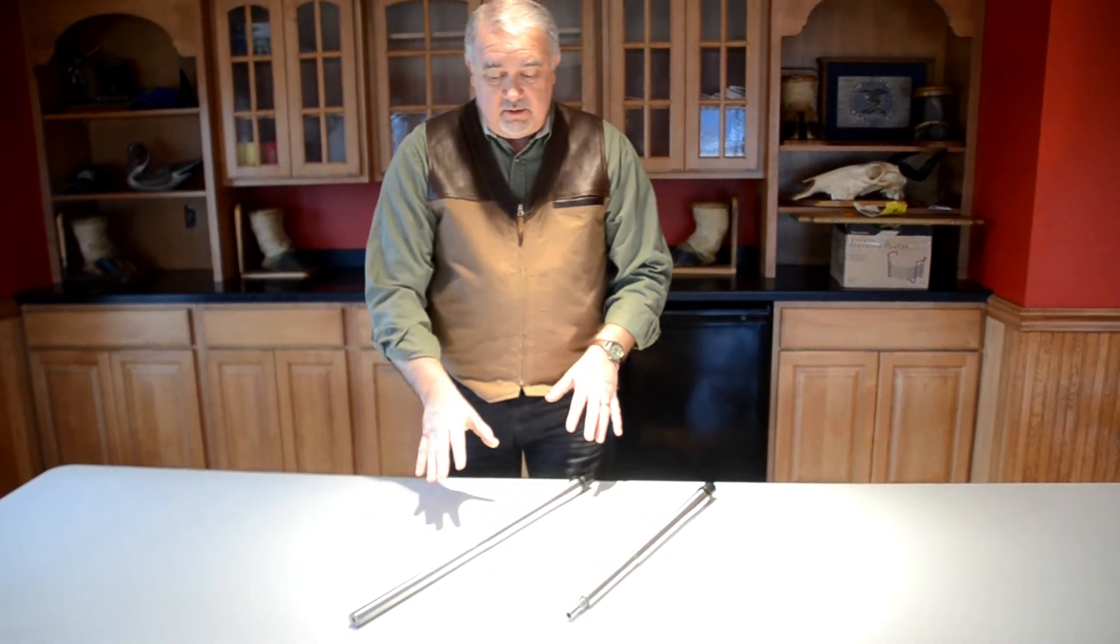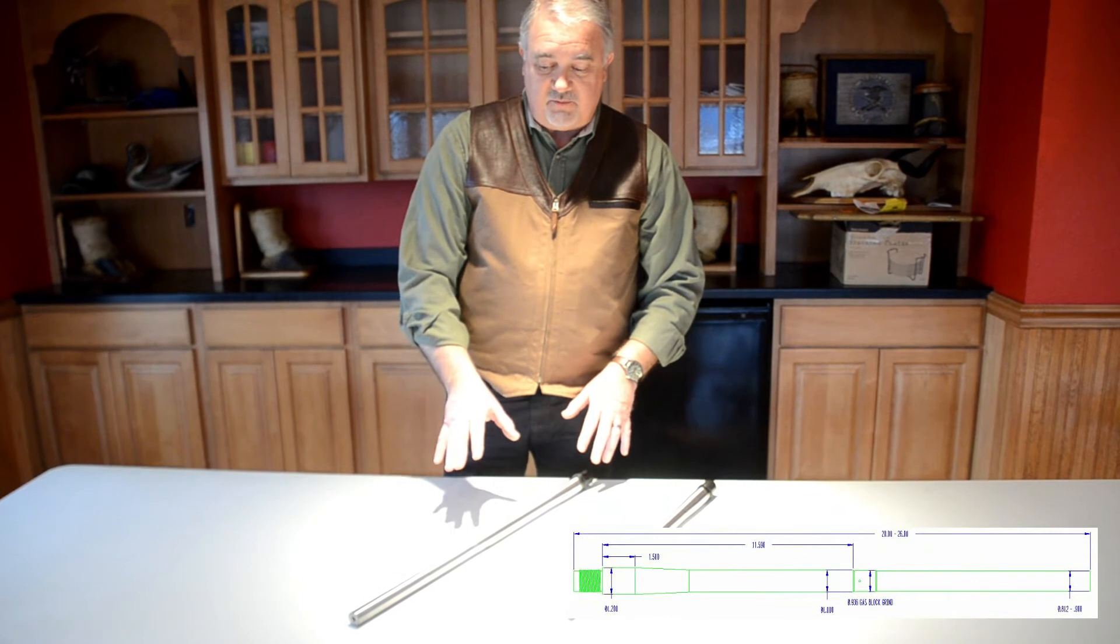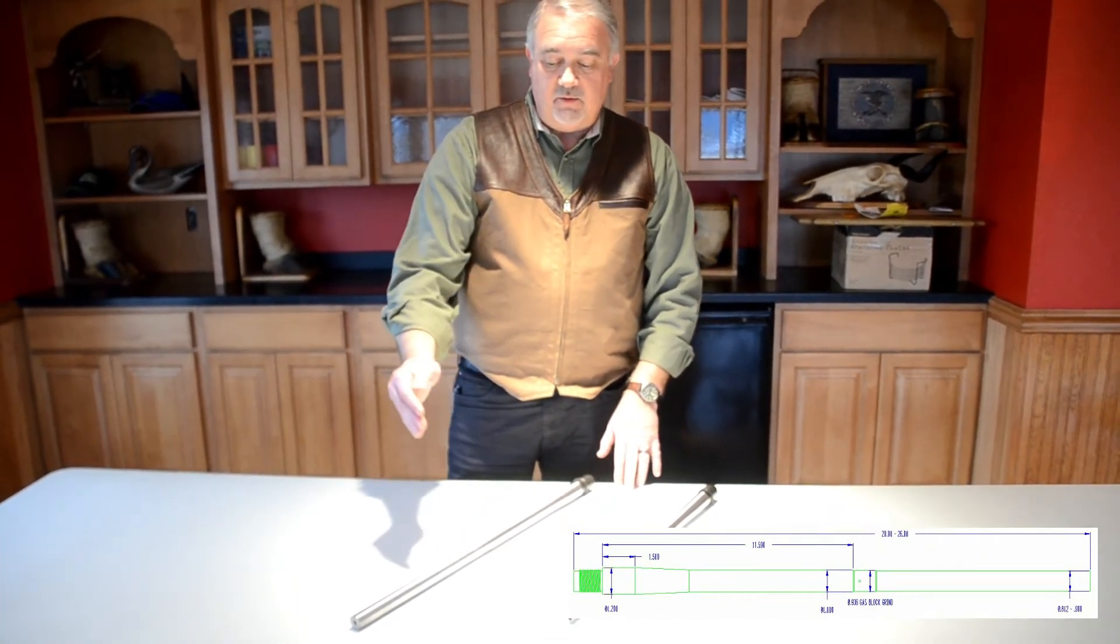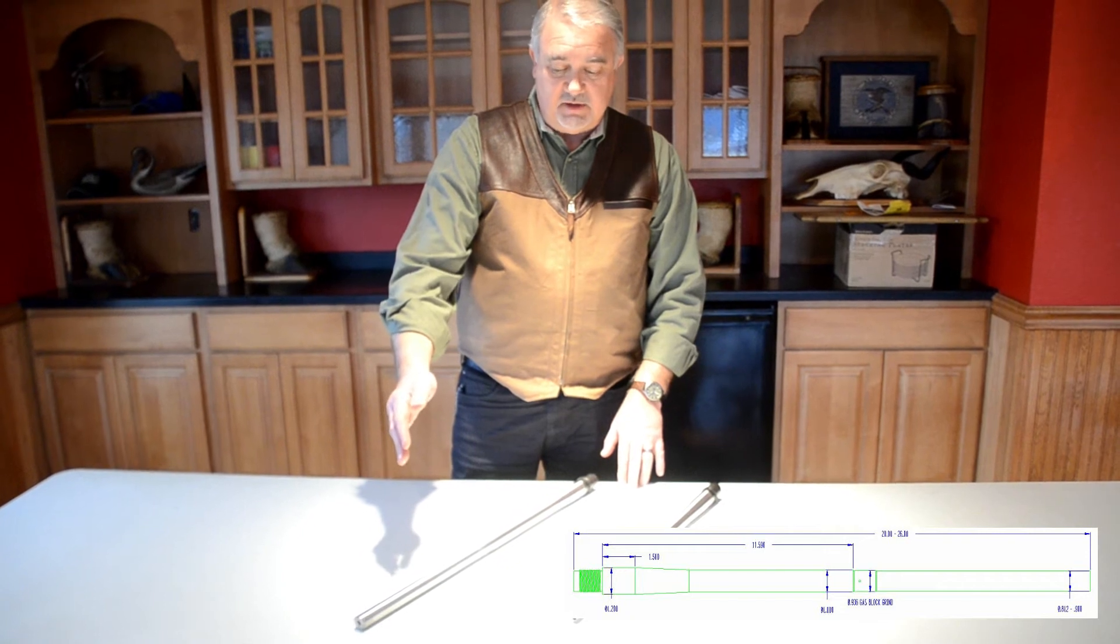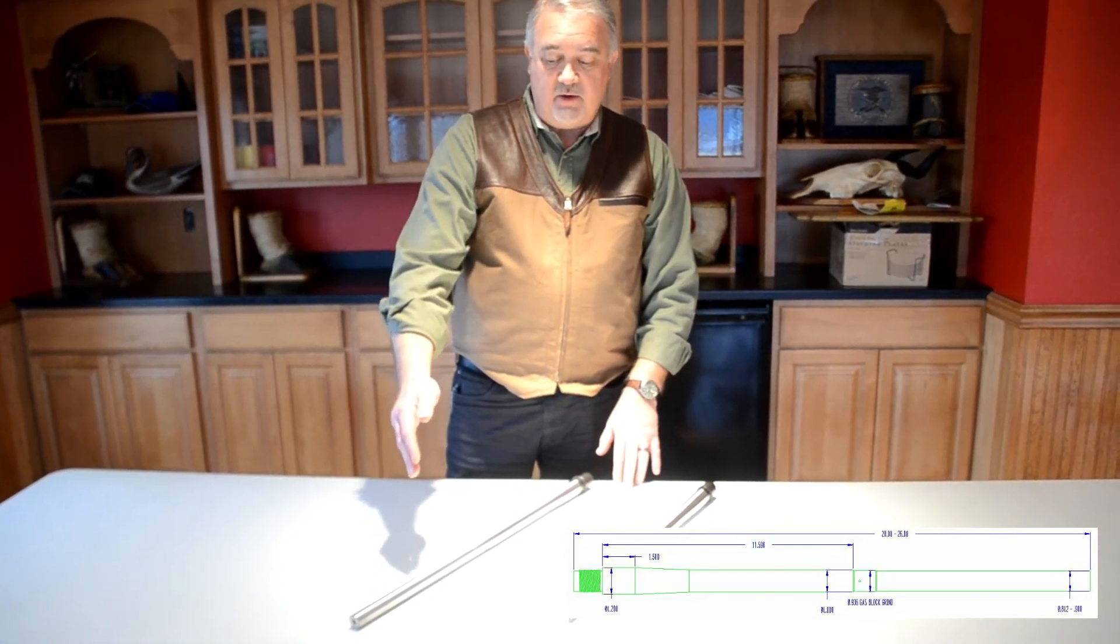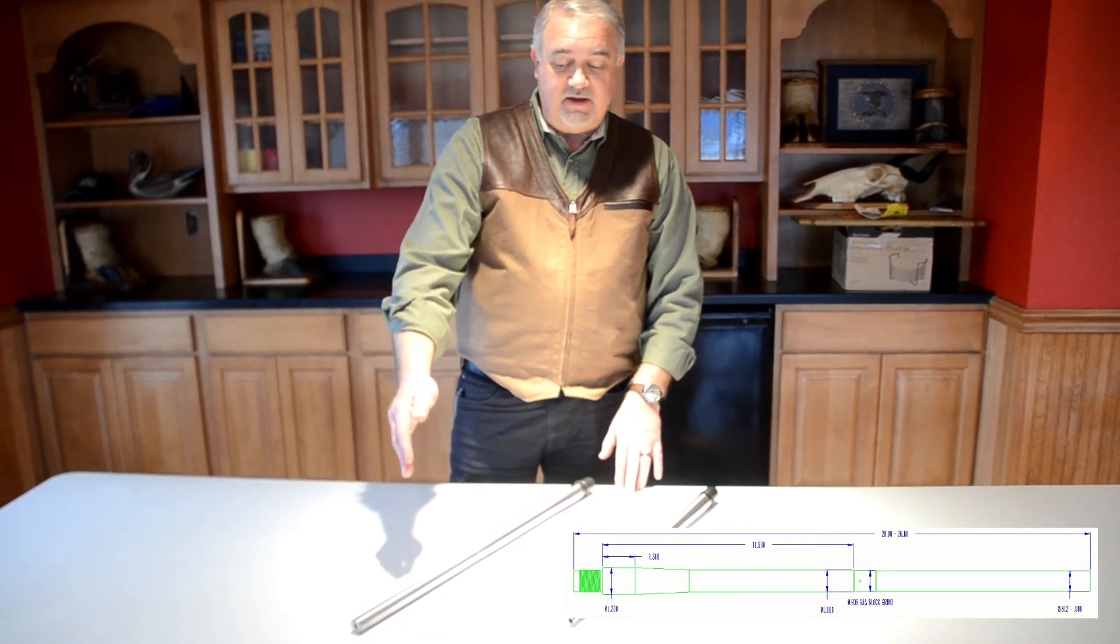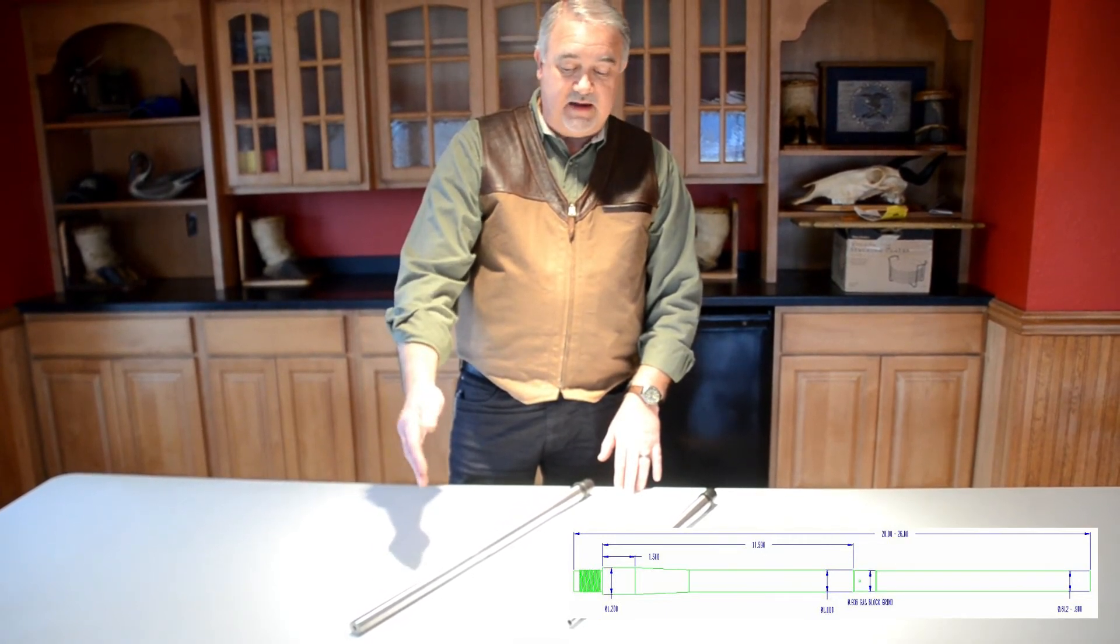This one here is our standard AR-10 DPMS platform barrel. This is the configuration it comes in. This is available from 20 to 26 inches and with the muzzle diameter the standard would be 900 muzzle. It is available at 812 or 750 upon request and an extra charge.